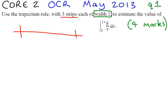So if you imagine we're going from 5 to 11 and each one has width of 2, the x values are going to take the values 5, 7, 9, and 11.